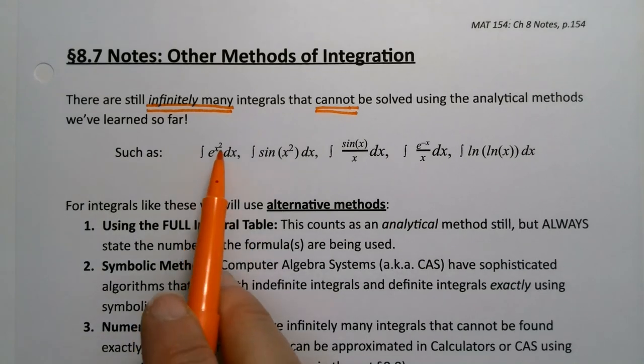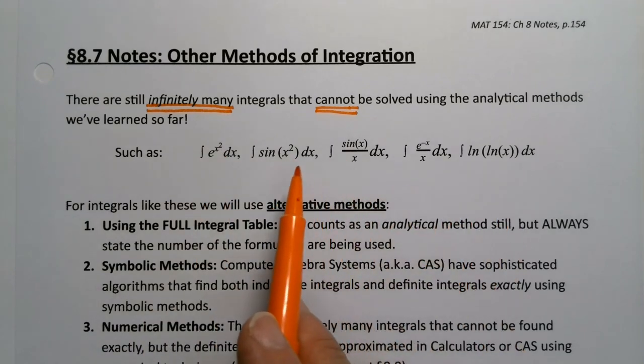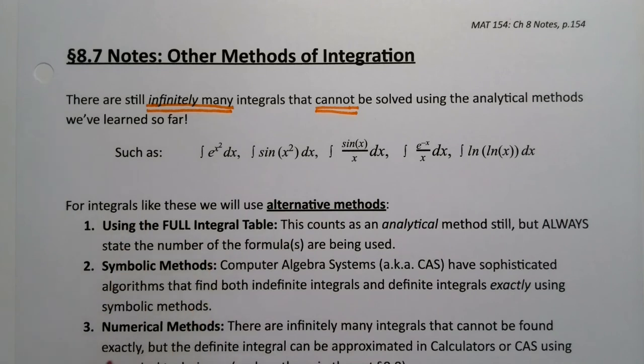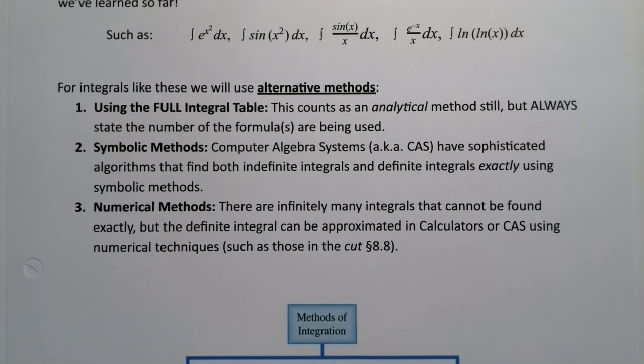So for example, e to the x squared, or sine of x squared, sine of x over x. They seem relatively simple integrals, but none of them are able to be solved with the methods that we've learned so far. Amazing, isn't it? So that means that we're going to need a few other alternative methods to get us by.